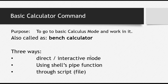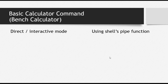Linux has a basic calculator already installed called the bench calculator (BC). There are three ways to use it: the first is direct or interactive mode, the second is using the shell's pipe function, and the third is through a script file. In this video we will cover the first two methods. Let's open a terminal and see how to use them.